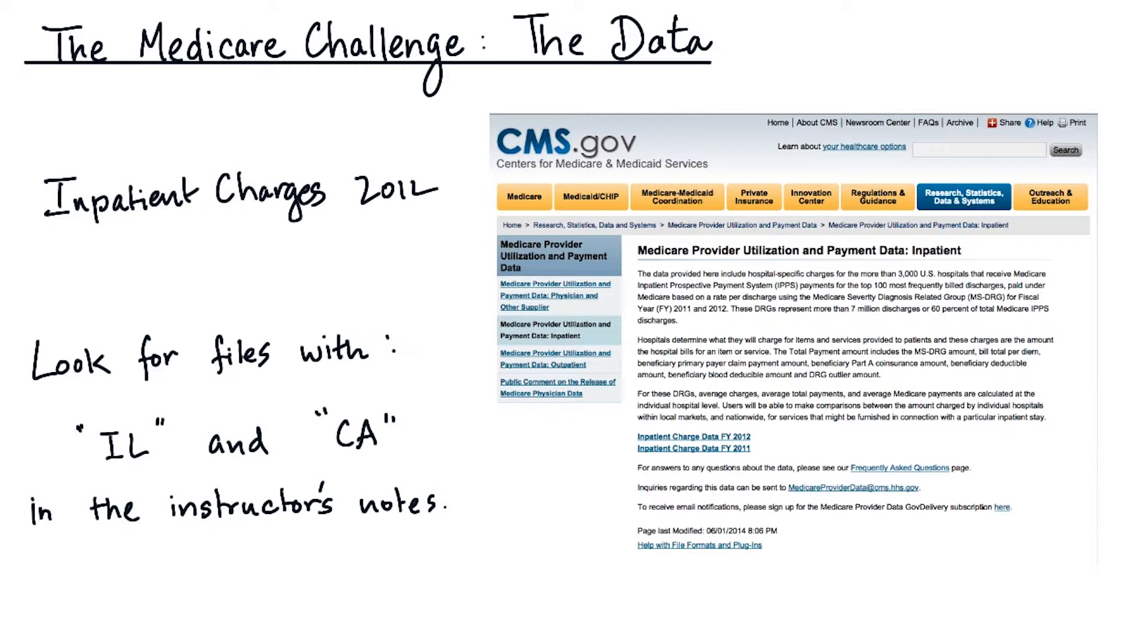You're welcome to use the entire data set, especially if you want to explore the data further than we do in the lesson here. However, to make things easier and faster, we have reduced the original data set and put the needed files in the instructor's notes. So look for files with Illinois and California in the instructor's notes, and that's the files we are going to use for the rest of this lesson.